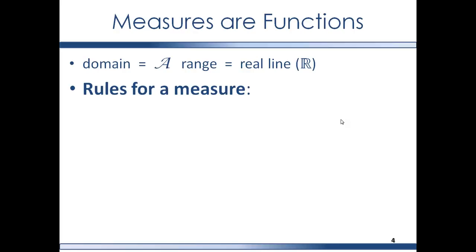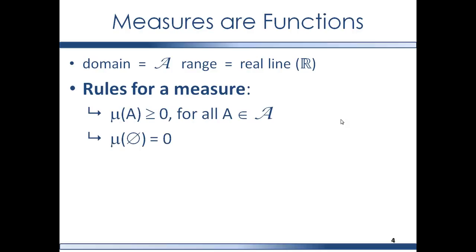The rules are: one, a measure assigns to each set in a sigma algebra a number on the non-negative real line — that number can be zero, but it is not allowed to be negative. Two, the empty set, which is found in every sigma algebra, is assigned the number zero.